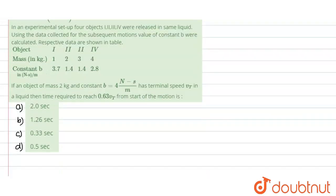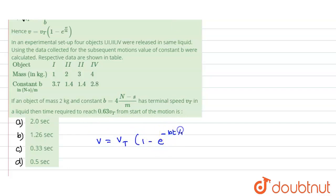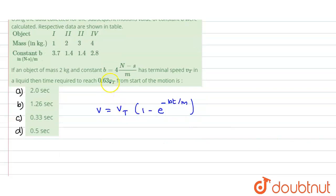Now there are a few data values given. The question asks: if a body of mass m has constant b equal to 4 newton-seconds per meter, with terminal velocity vt in a liquid, what is the time required to reach 0.63 vt from the start? We know that velocity v can be written as vt times the quantity 1 minus e to the power of negative bt divided by m. We put the velocity as 0.63 vt.